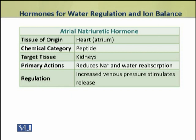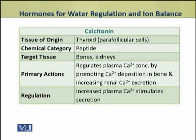In this condition, the atrium of the heart produces a hormone called atrial natriuretic hormone. It is a peptide hormone. It has two effects: it increases the volume of urine produced. As a result, venous pressure decreases and blood pressure is regulated by regulating ion and water balance.